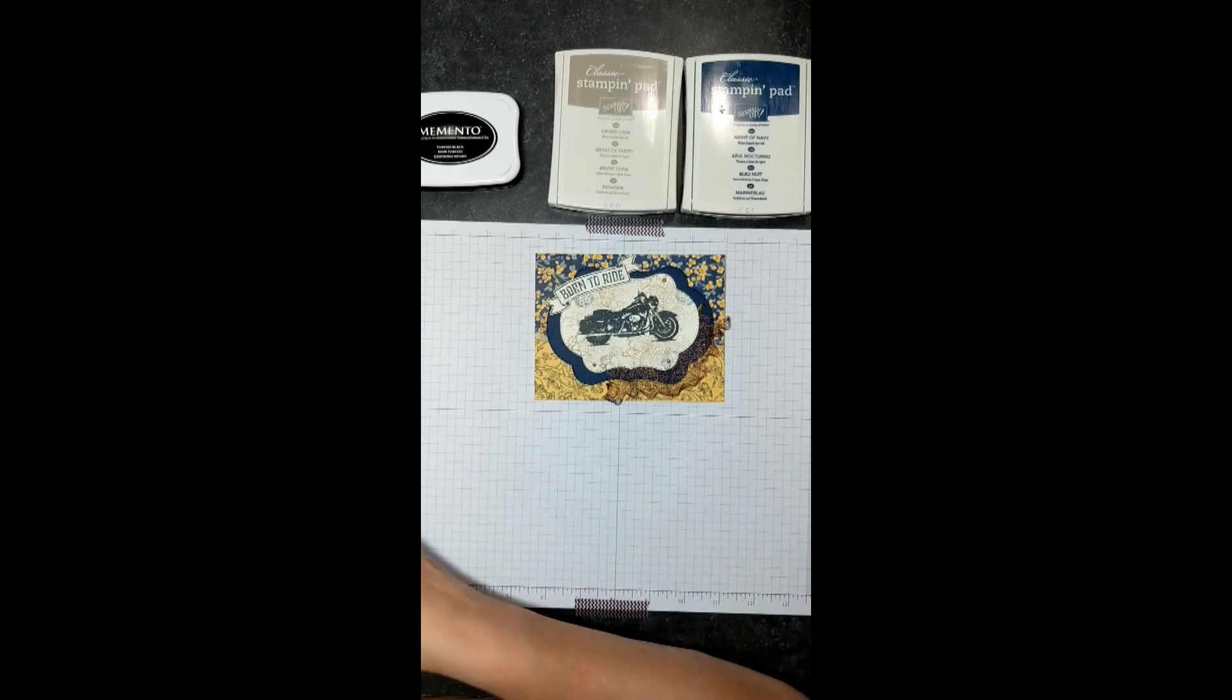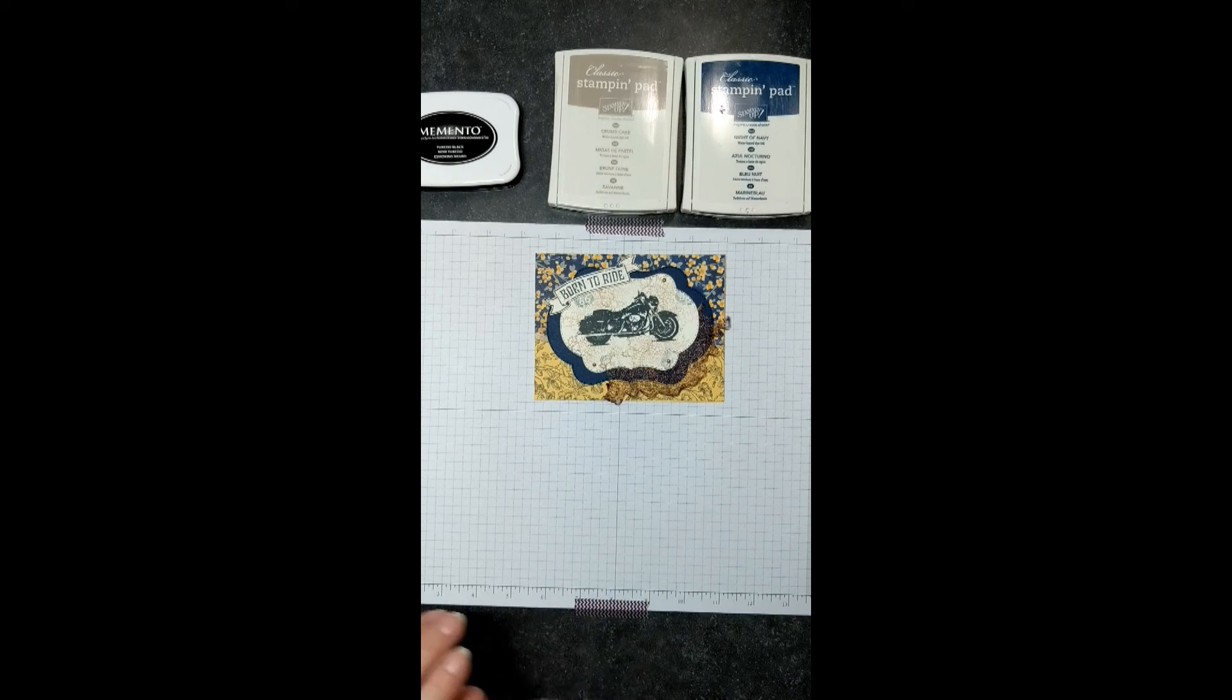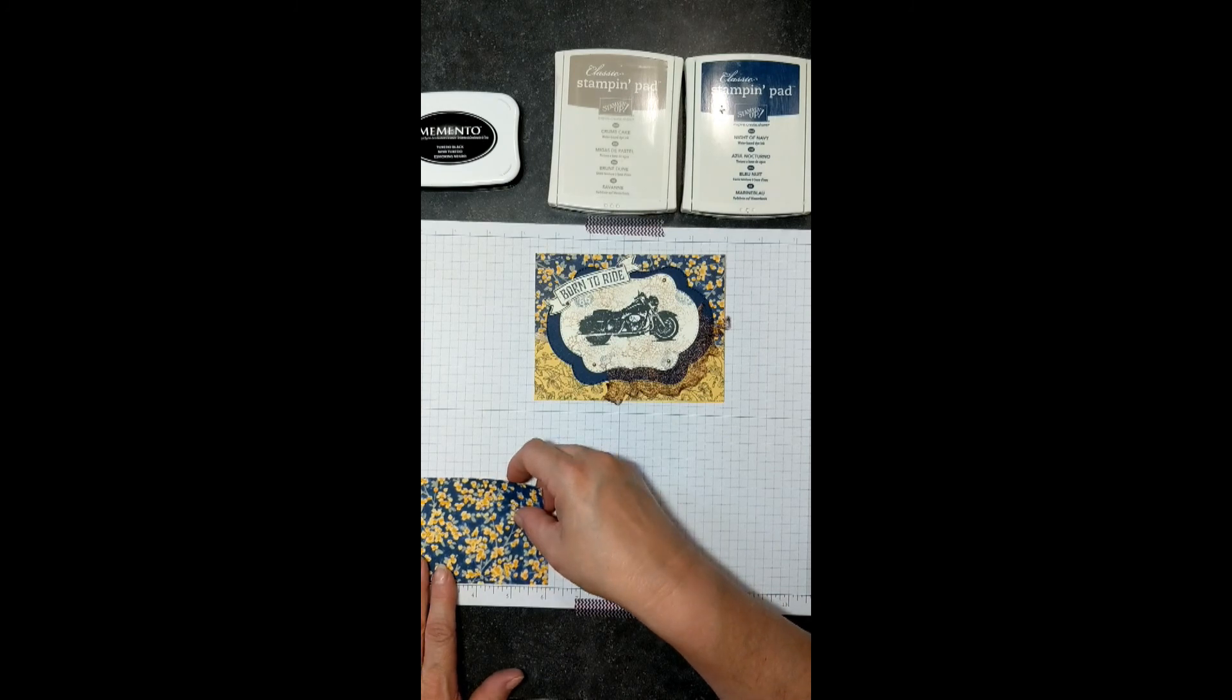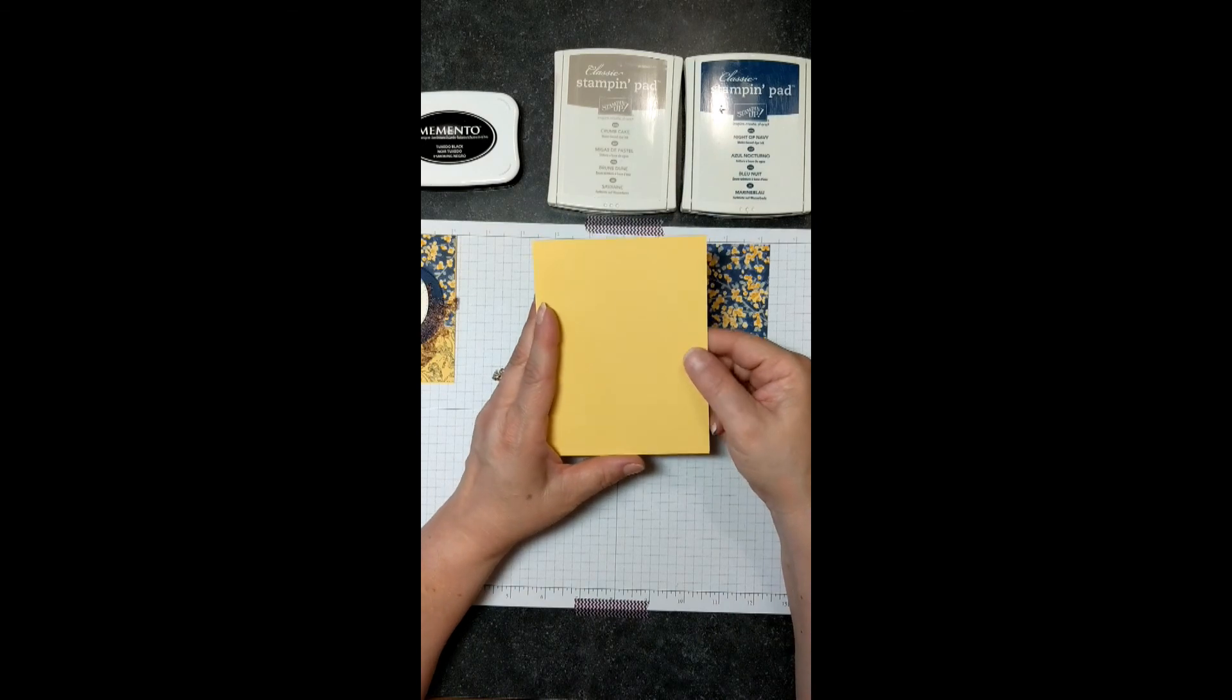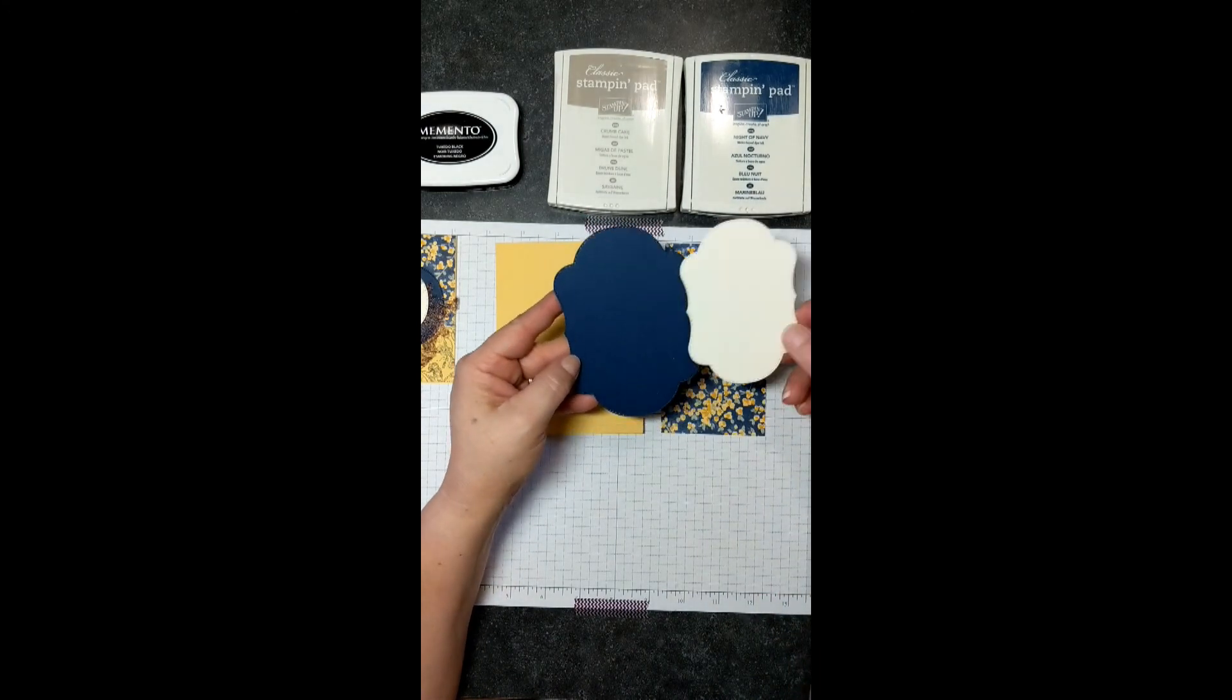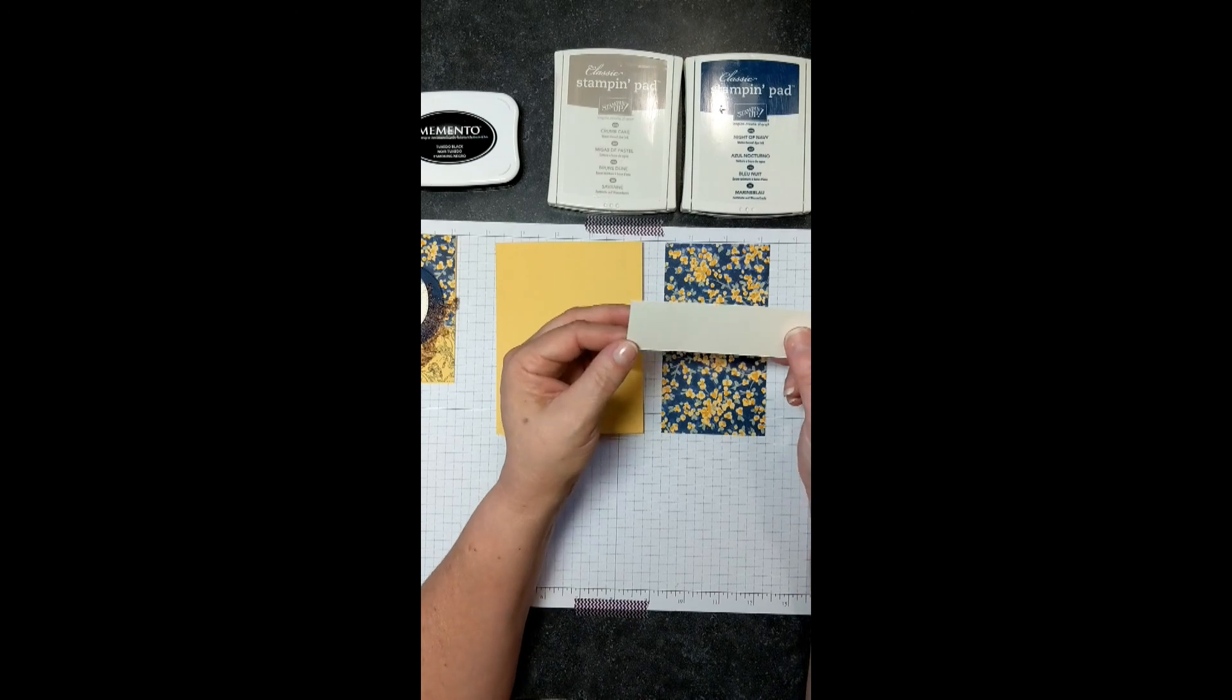We will have our frames cut out. Also, we will be using the Designer Series Paper Pack, the Garden Impressions. I have pulled out the piece that is this color on one side and coral on the other. I have cut it at 3 inches by 5 1/2. Then we have some Saffron, cut at 8 1/2 by 5 1/2 and scored at 4 1/4. I have pre-cut pieces on the Big Shot. I have used the largest frame out of Night of Navy, the middle frame out of ivory paper, and a scrap for stamping our Born to Ride sentiment on.